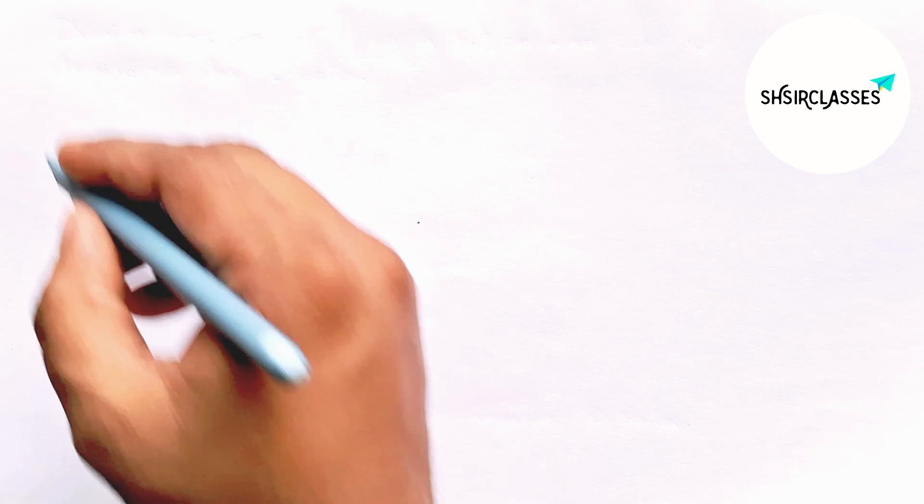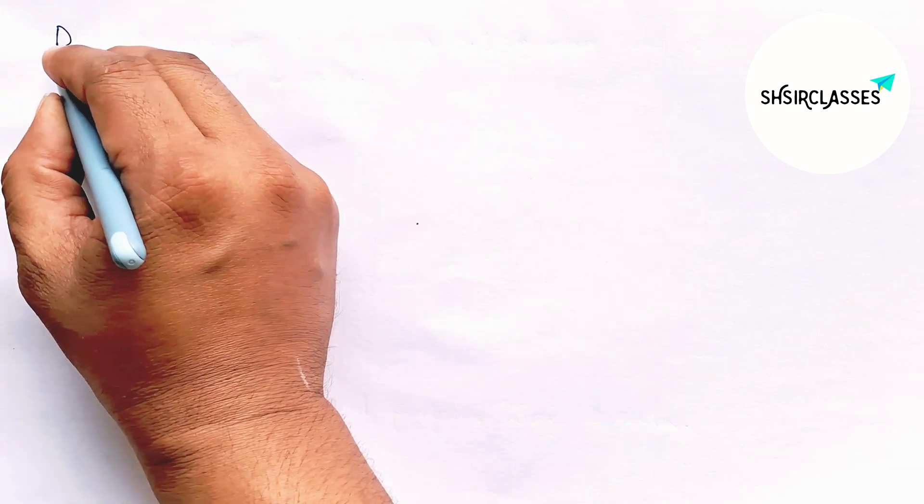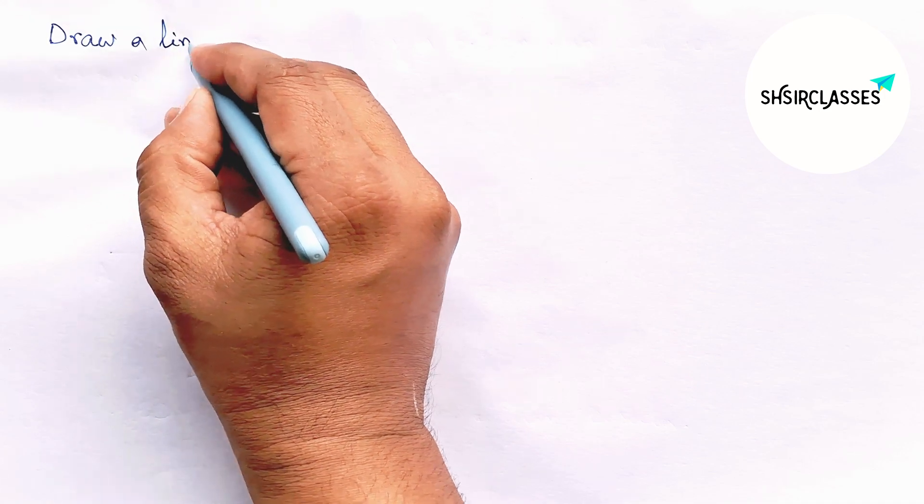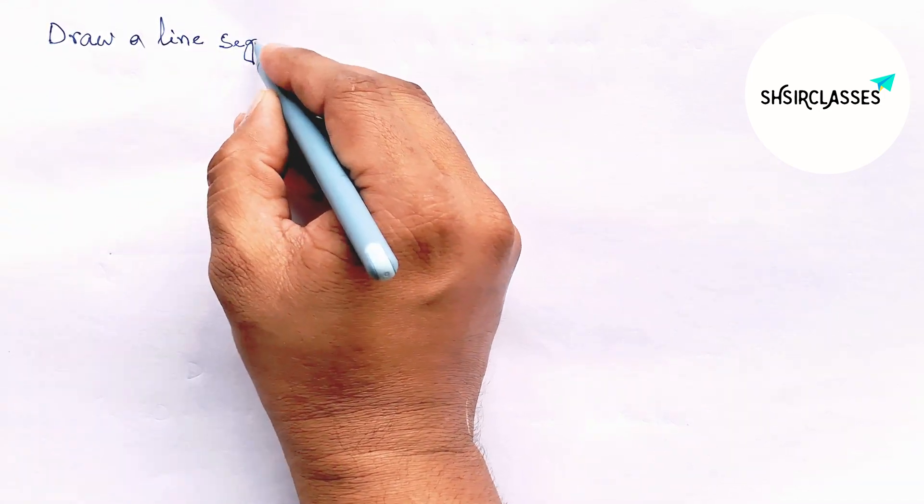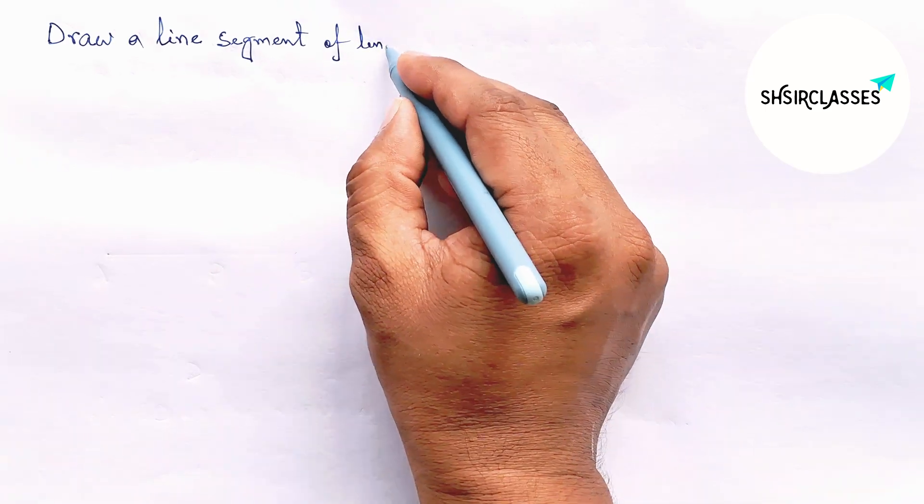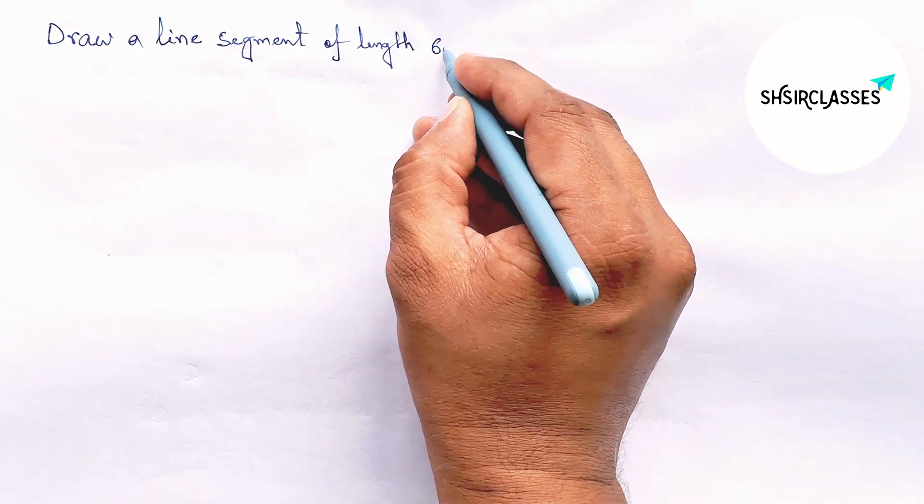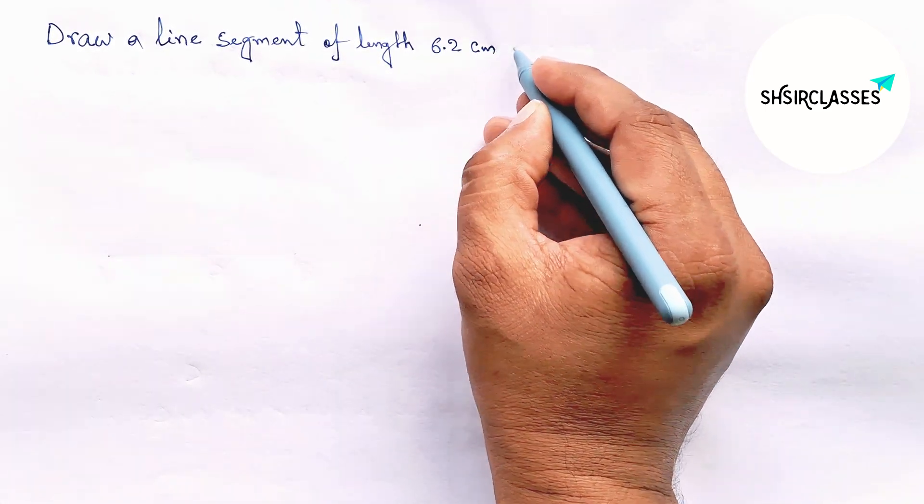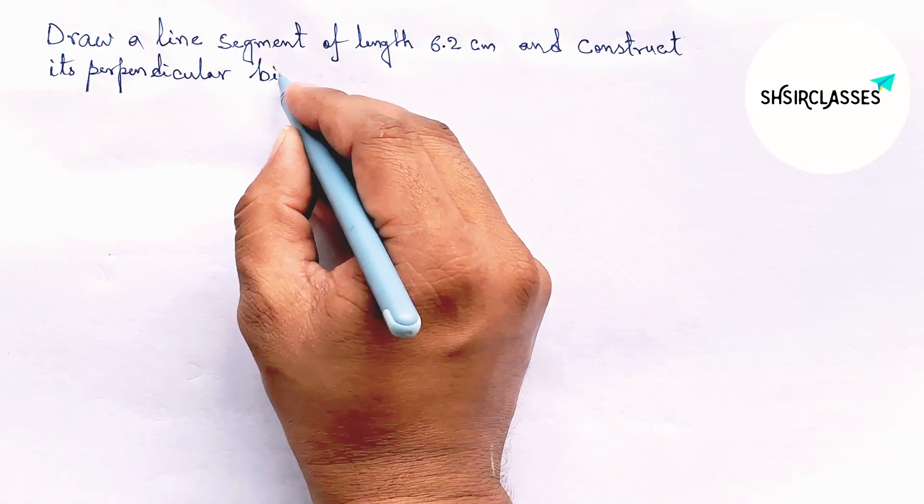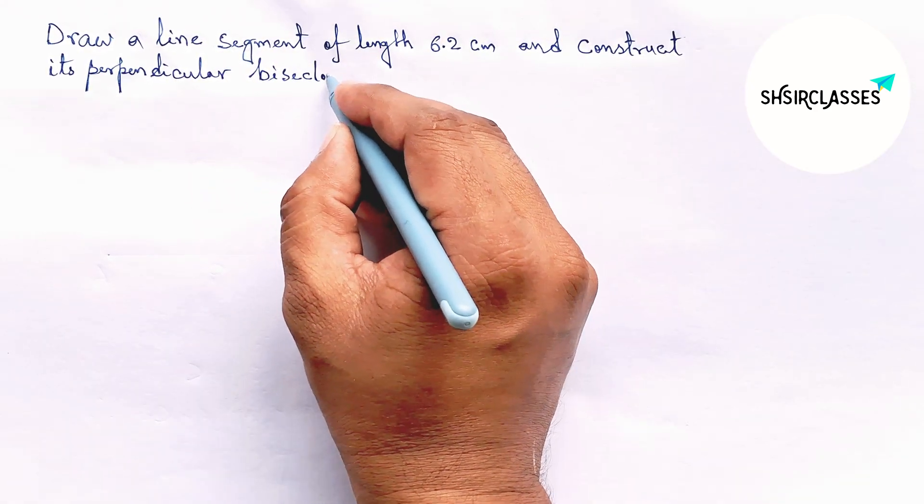Hi everyone, welcome to SI Share Classes. Today in this video, draw a line segment of length 6.2 centimeters and construct its perpendicular bisector to the given line in an easy way. So please watch the video till the end.